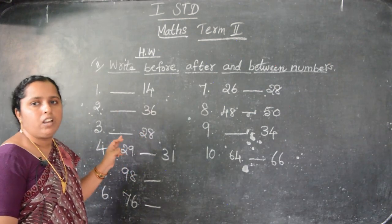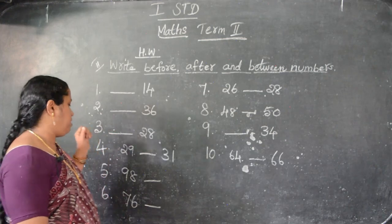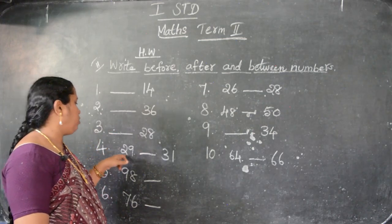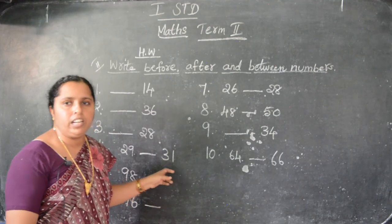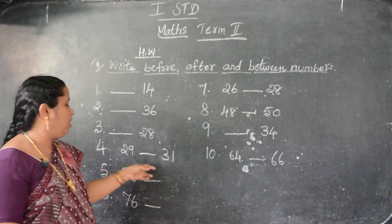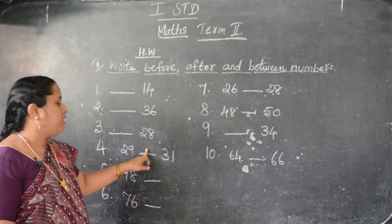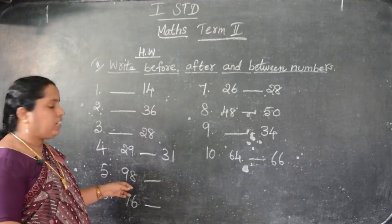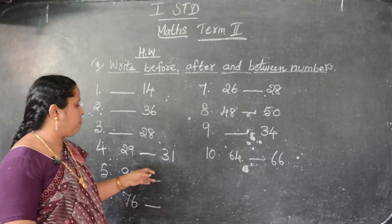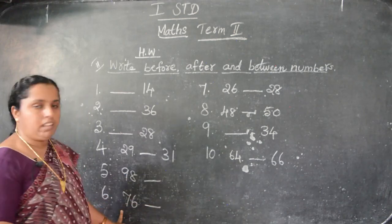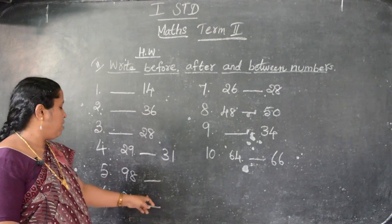Here see, they are given 29 dash 31. You have to write the middle number. 29, 31 - in between, what number you have to write? 30. Next: 98. After 98, what number comes? 99. Here see: 76. After 76, what number comes? 77.